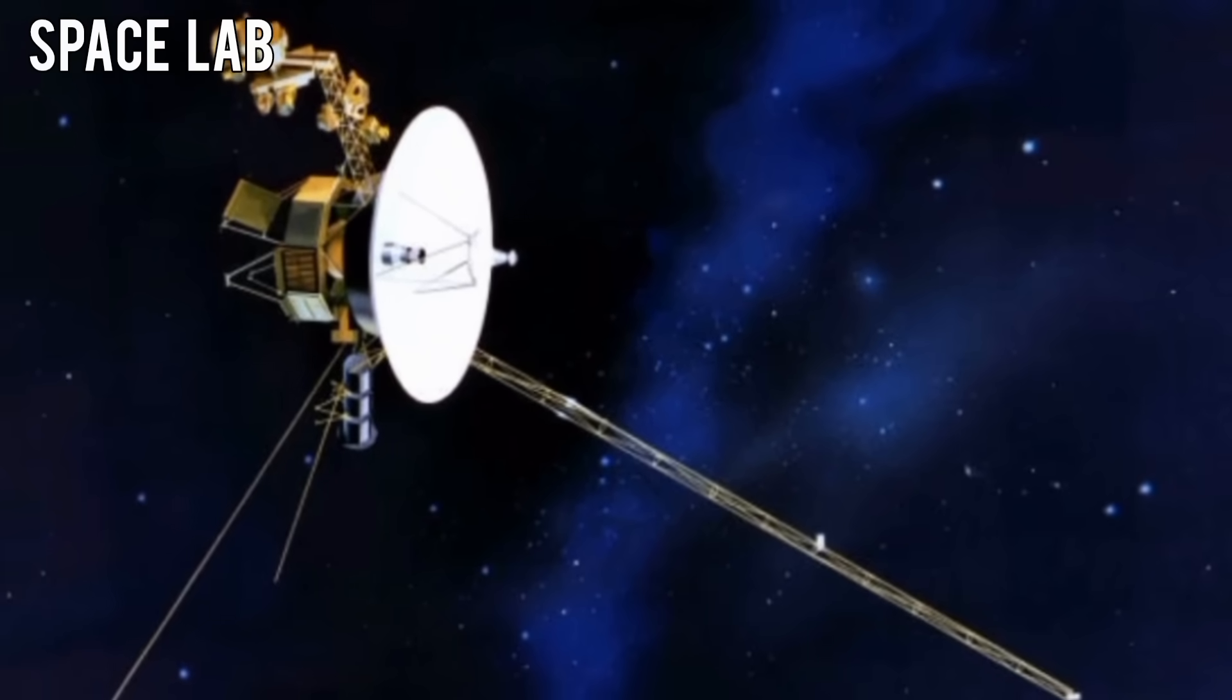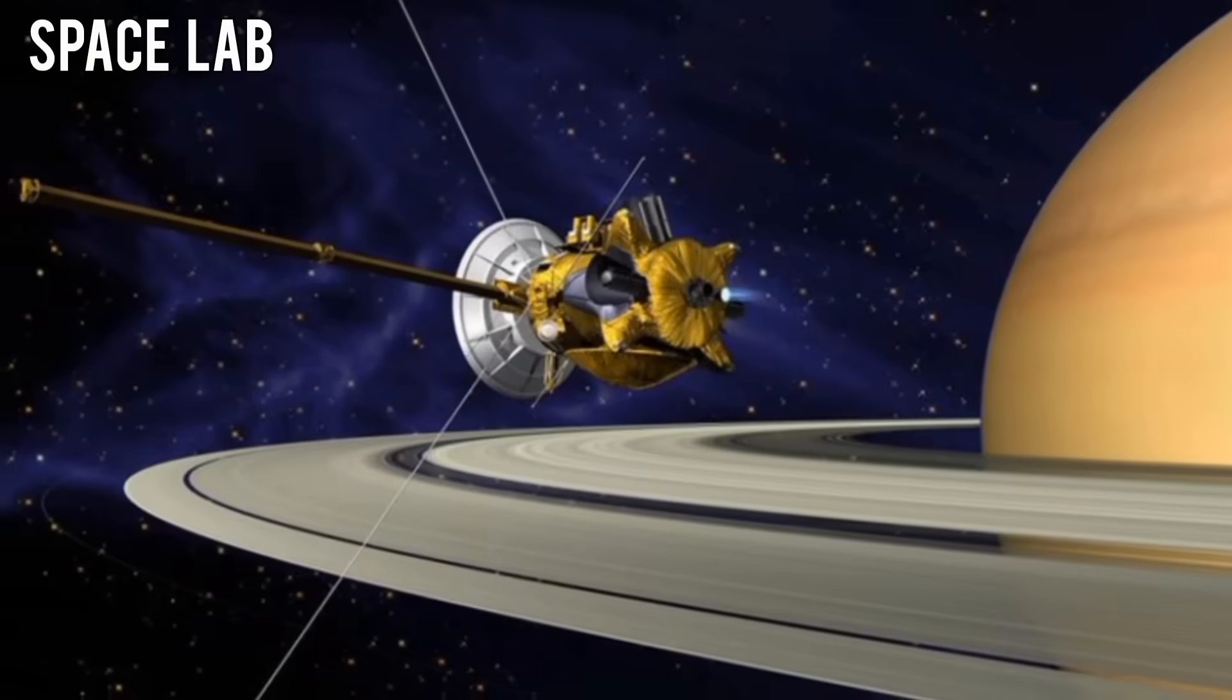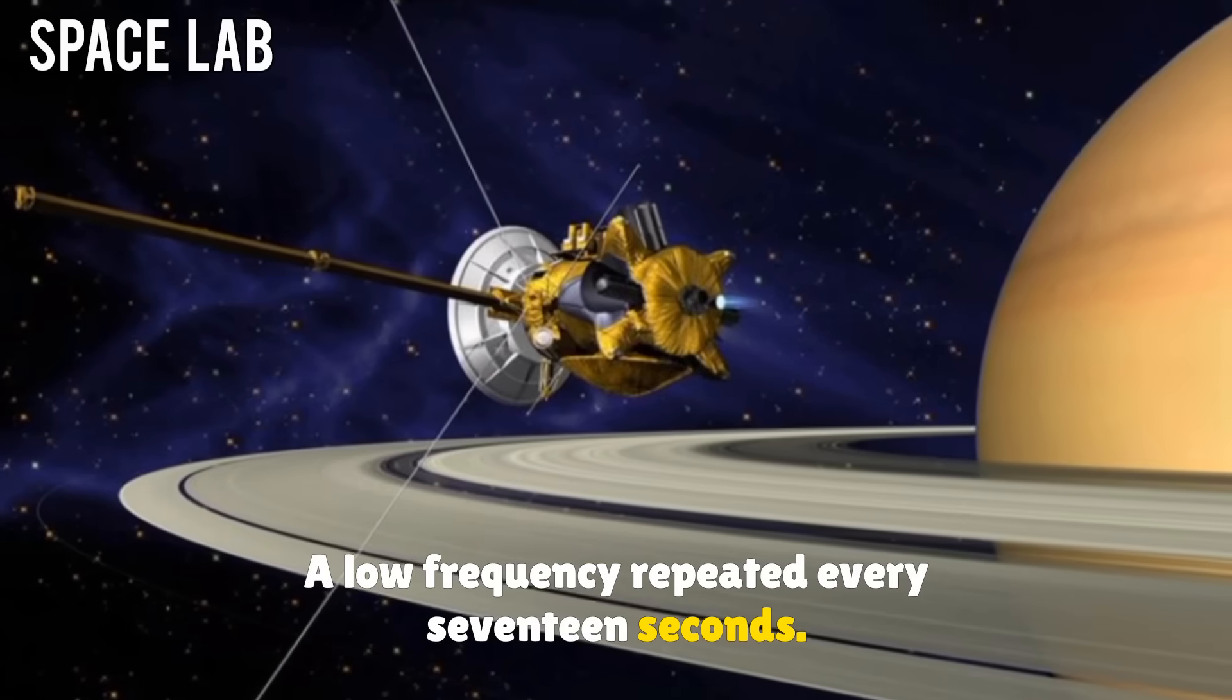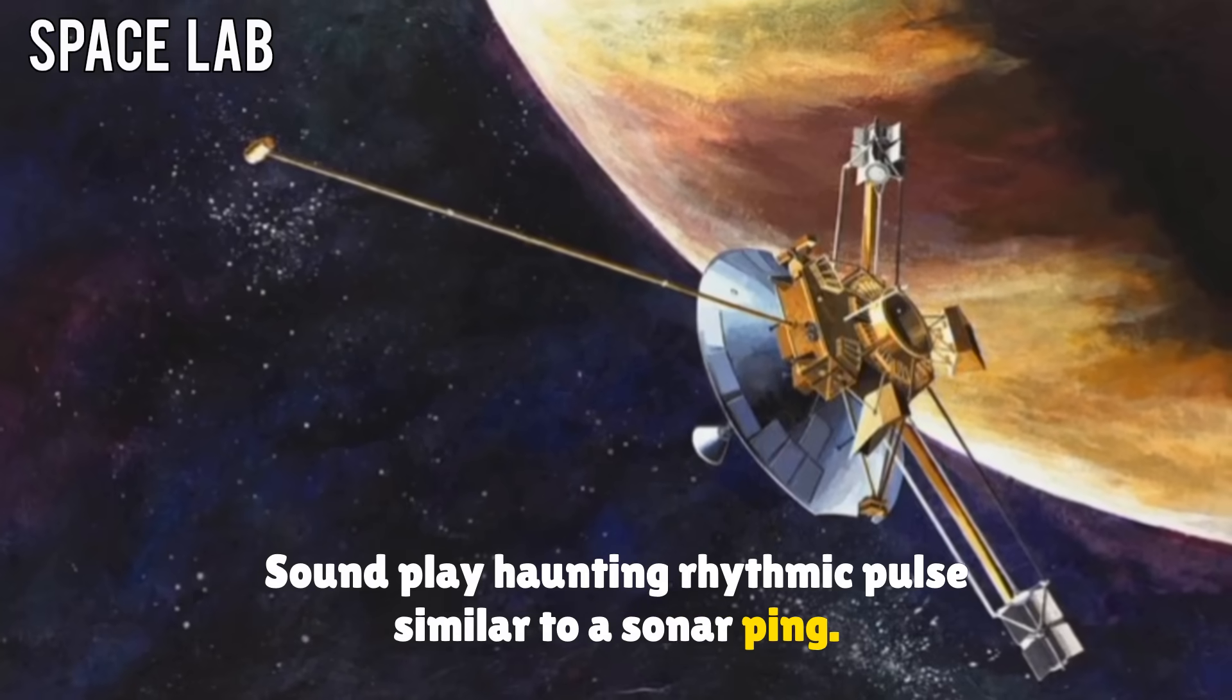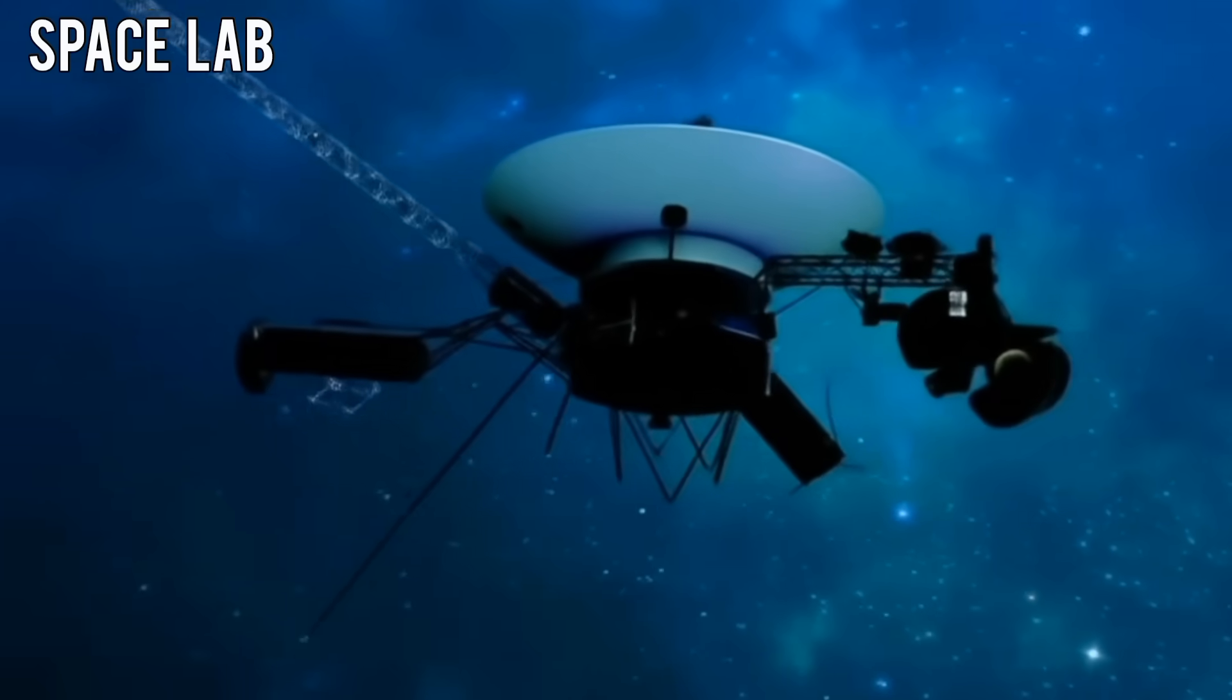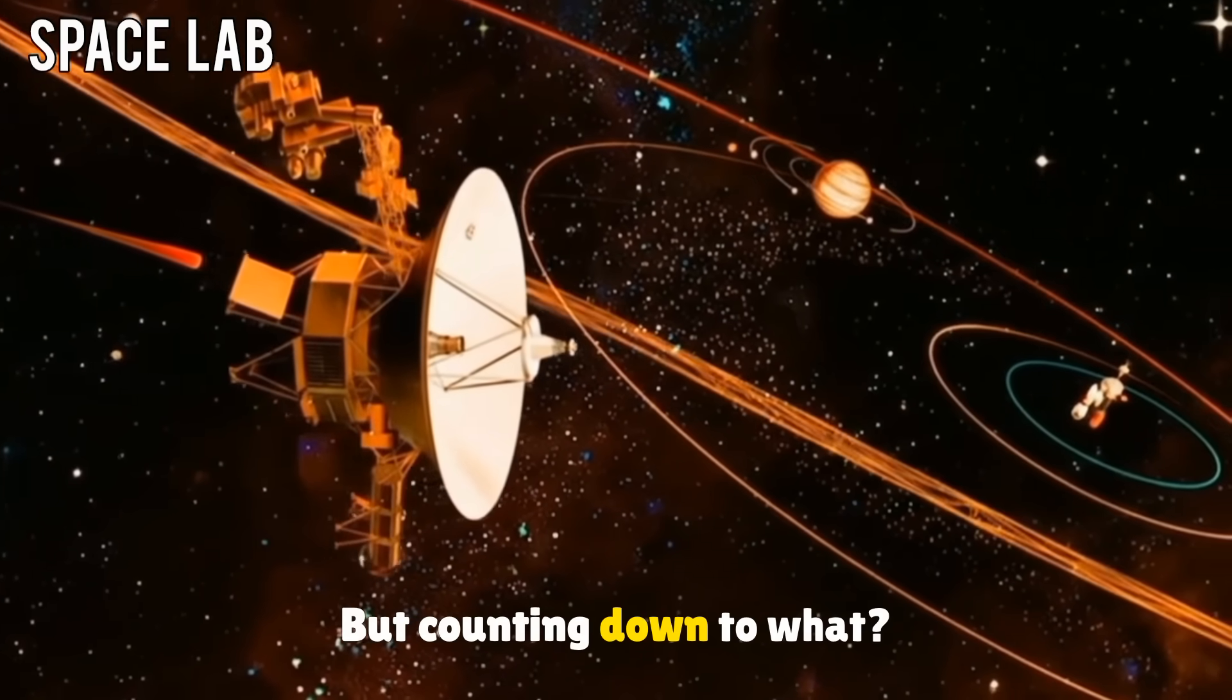That's when the audio logs were examined. Though Voyager doesn't have a microphone, its magnetometer and plasma wave instruments can detect electromagnetic fluctuations. What they picked up over 12 billion miles away was a rhythmic pattern. A low-frequency hum repeated every 17 seconds. Sound. Play haunting rhythmic pulse, similar to a sonar ping. Experts in artificial intelligence were brought in. Using pattern recognition algorithms, researchers discovered something astonishing. The pulse contained binary patterns. Translated, they seemed to resemble a countdown. But counting down to what?